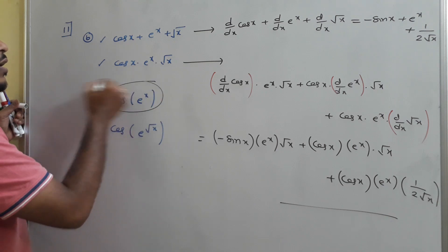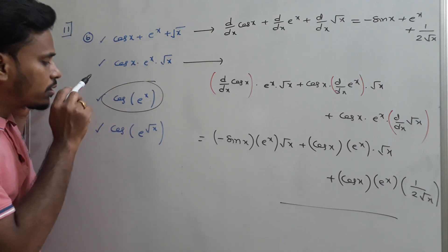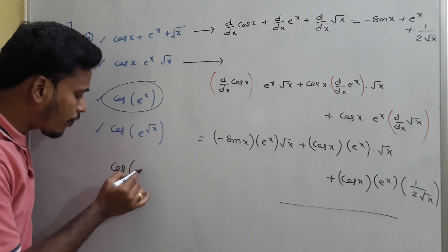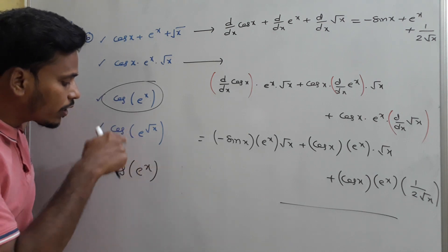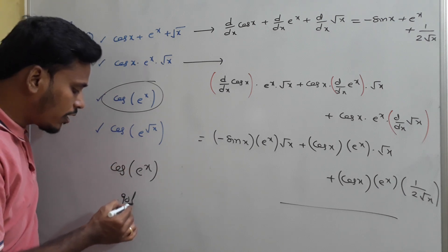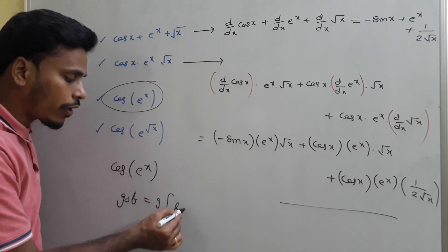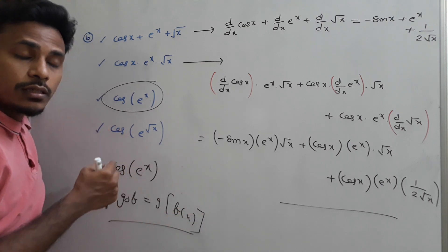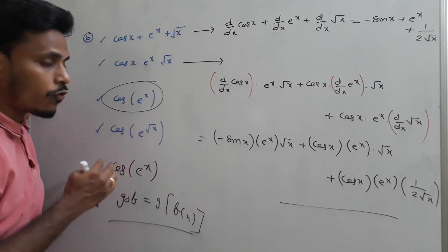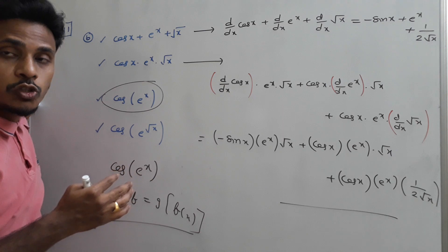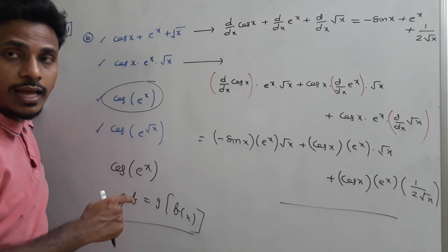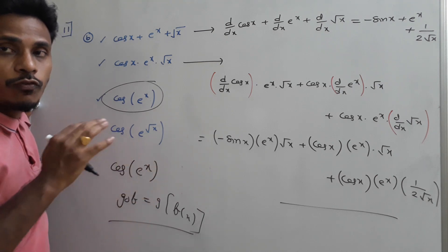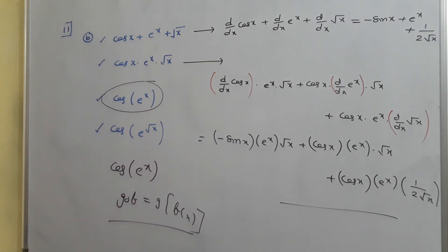For cos(e^x), this is a composition of functions — e^x is inside cos. There is no summation or product; this is g of f of x, which requires the chain rule, also called the composition or substitution rule. We will now solve simple problems using the chain rule to find derivatives of composite functions.